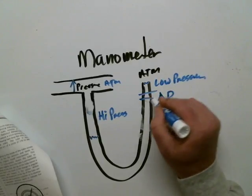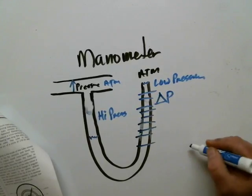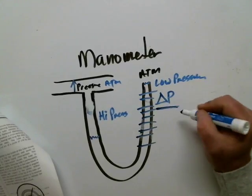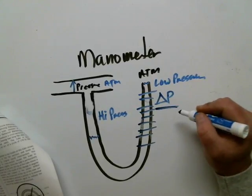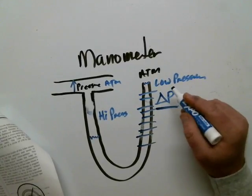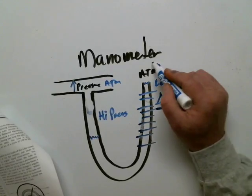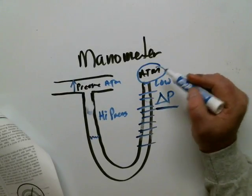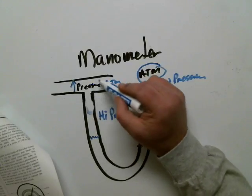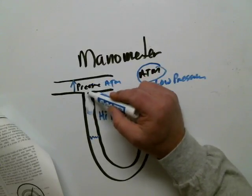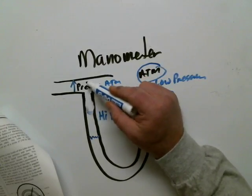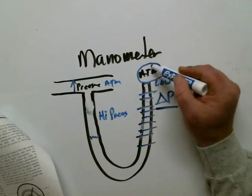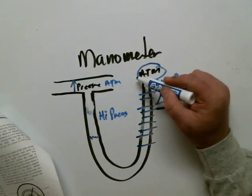A manometer is really a differential pressure device, as are all pressure gauges. This one is relative to atmospheric pressure, so the only variable is supposed to be the pressure in the pipe. As it rises and falls, the graduation would change. And this is supposed to be my static reference.